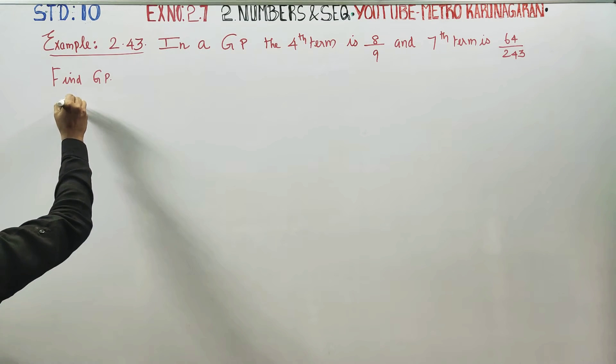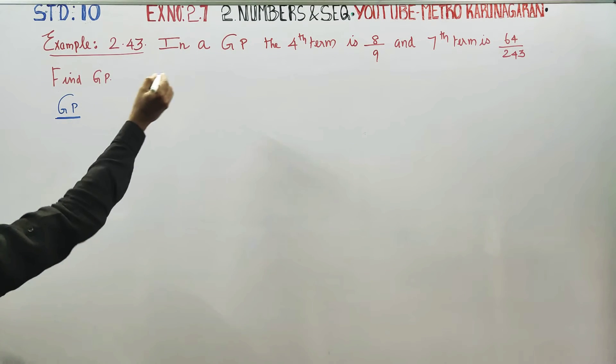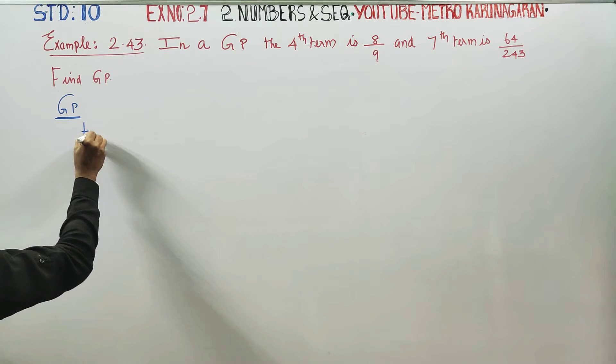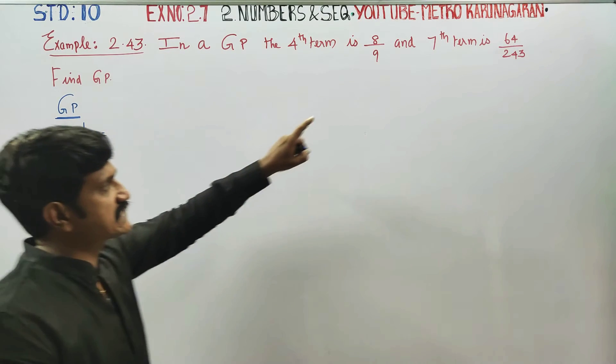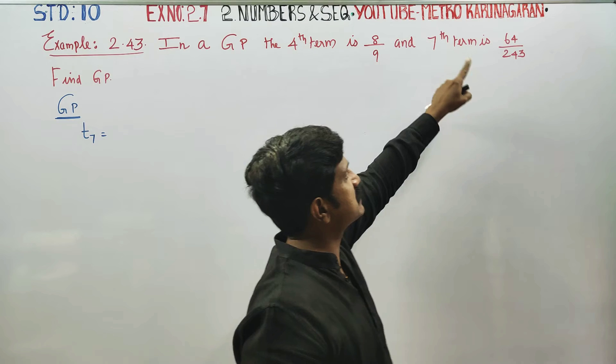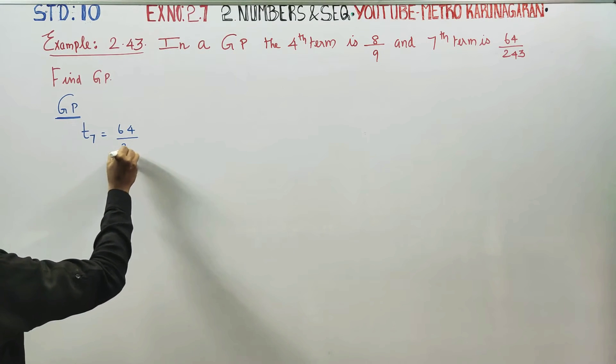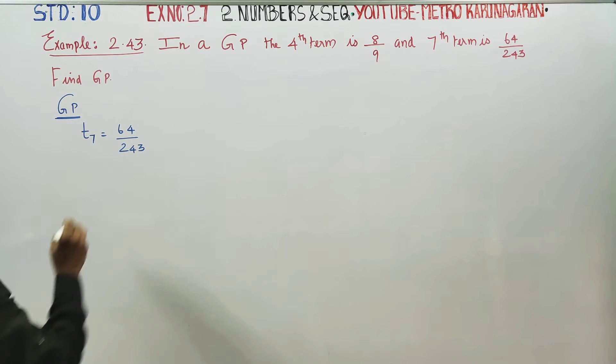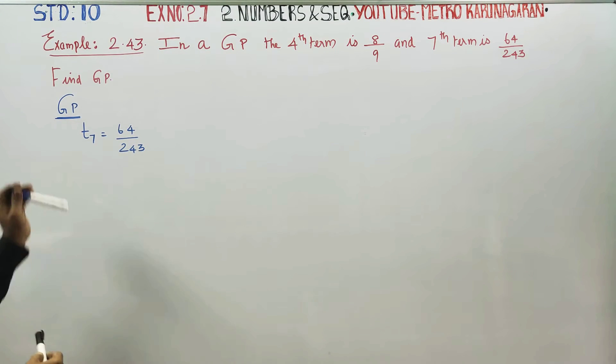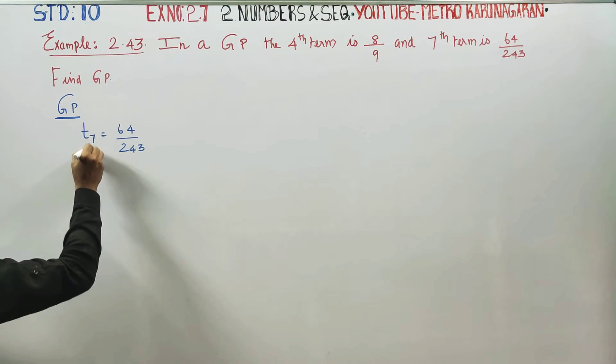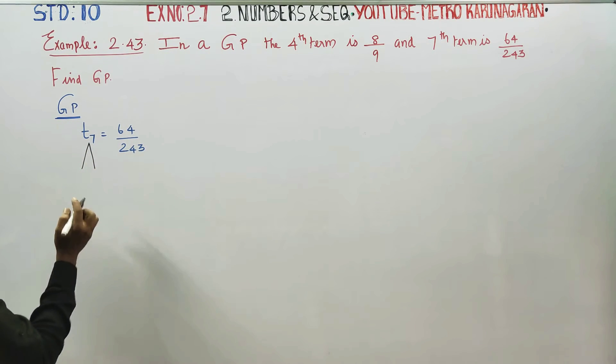First one, I am going to declare this sum as GP because GP we have got geometric progression. A big term, 7th term is equal to 64 by 243. Now T7 formula is, I am going to declare this formula. General term formula is A, R, or R or multiplication will be.